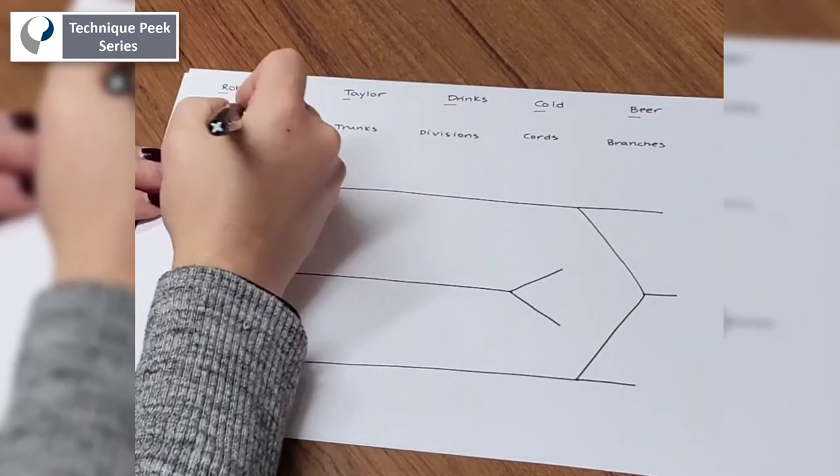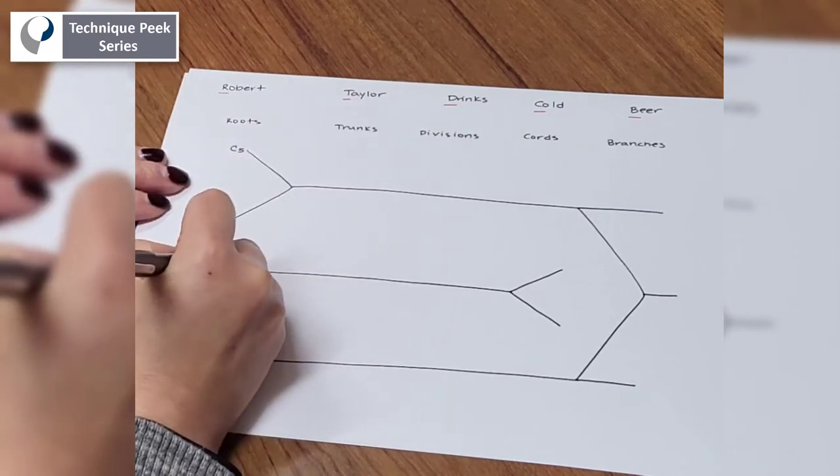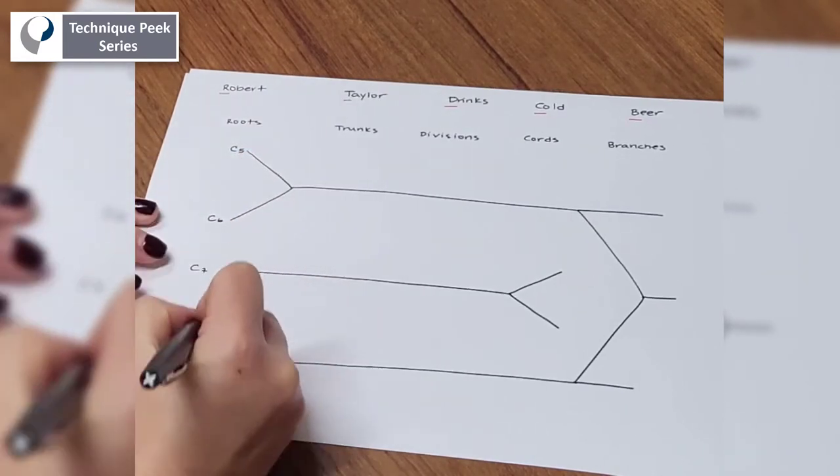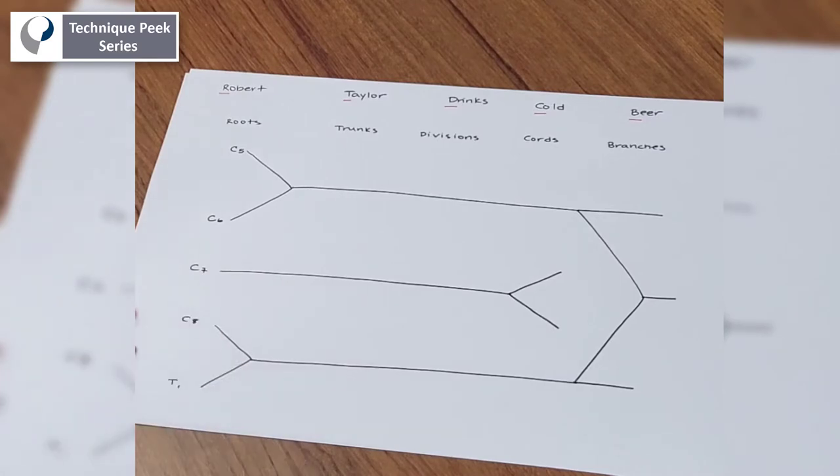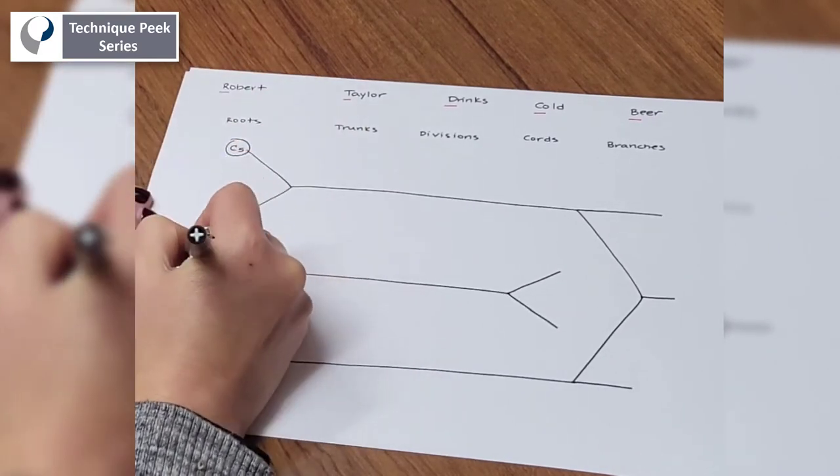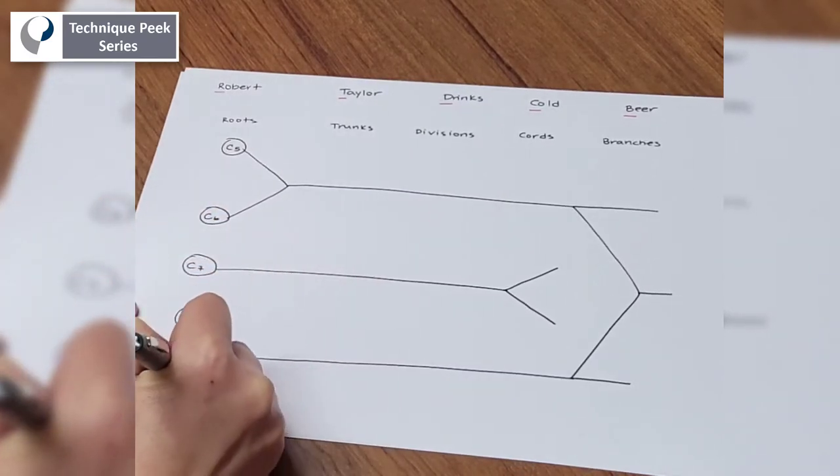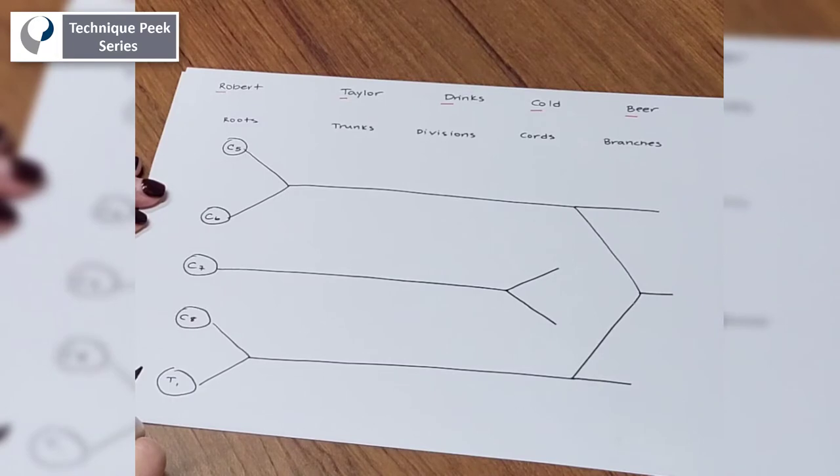So we're going to start with the roots. We start with C5, go down C6, C7, C8, and lastly T1. So we're going to make circles here because it helps us later on in the diagramming process.